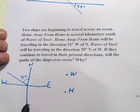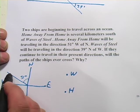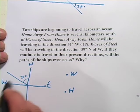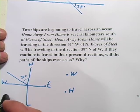And then it says Waves of Steel will be traveling in the direction of 39 degrees north of west. So you start at west, and you go 39 degrees up that way. So the question is, where do I put that on this diagram, 39 degrees?